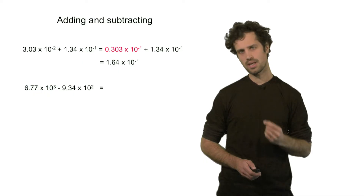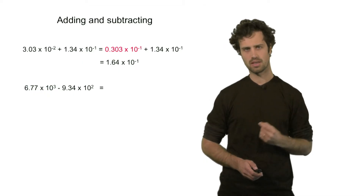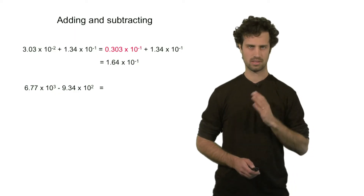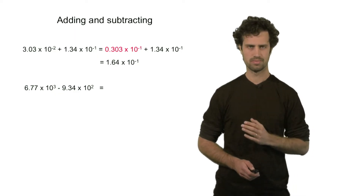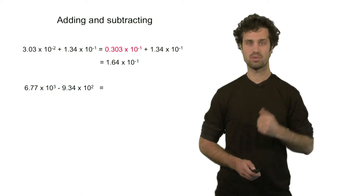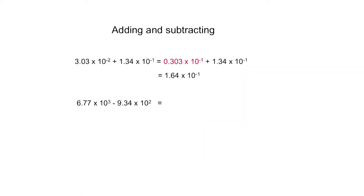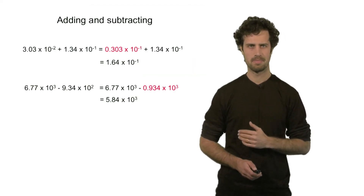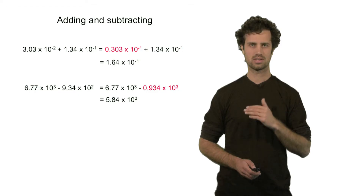Another example: here I'd like to subtract a smaller number from a bigger number. The bigger number has 10 to the power 3, and the smaller number has 10 to the power 2. Similar to the previous case, I raise the power of the smaller number up to the level of the larger number by moving the decimal point over one position, giving 0.934 times 10 to the third. Now I can just subtract these two numbers quite easily, getting 5.84 times 10 to the third.